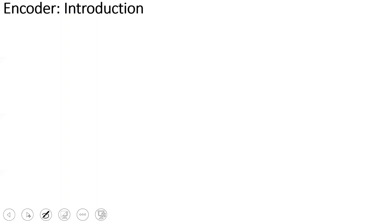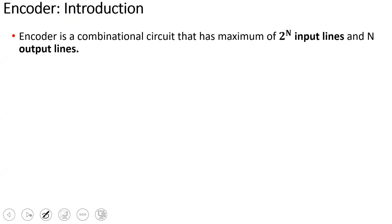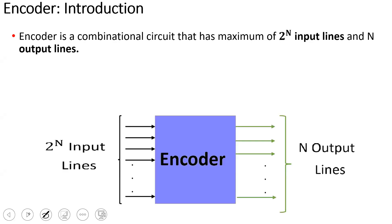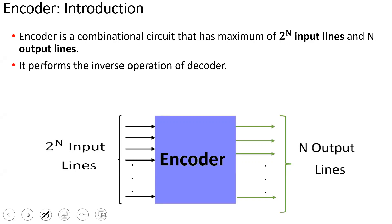So what is an encoder? It is a combination circuit that has a maximum of 2-power-n input lines and n output lines. In the decoder, there are n number of inputs and the output is 2-power-n outputs. So the encoder performs the reverse operation of the decoder.